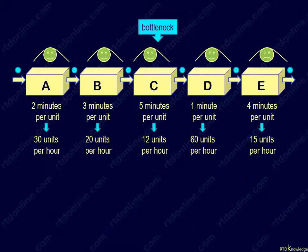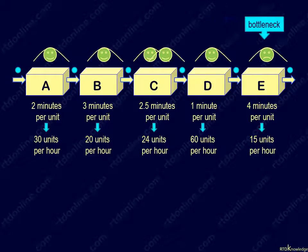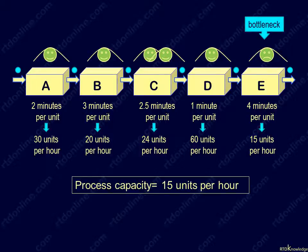Back to our original process. This time, let's add another operator to bottleneck station C. Note that its cycle time is cut to 2.5 minutes and the bottleneck shifts to station E, now with the longest cycle time of 4 minutes. Process capacity now goes up from 12 to 15 units.